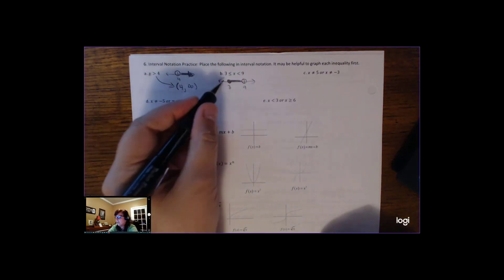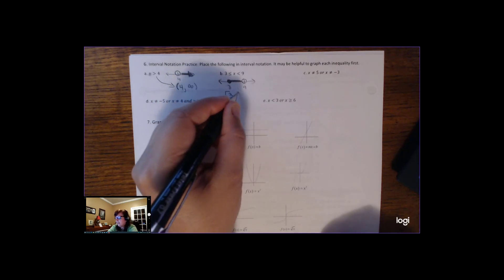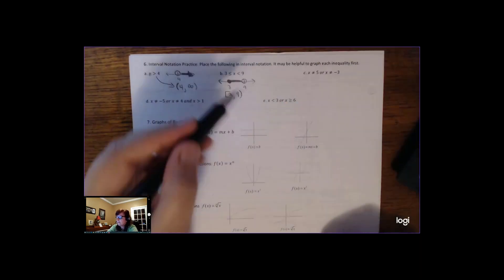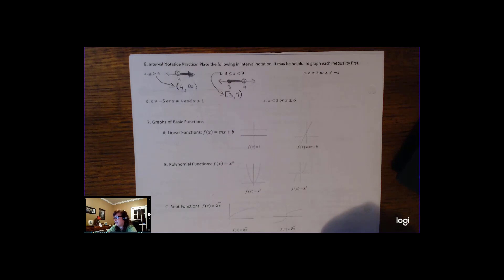And so again, interval notation is meant to mimic the number line. So this would be bracket 3 to 9 parentheses. So 3, x is between 3 and 9, that's what it looks like in interval notation.